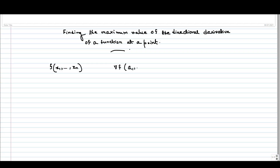Suppose the point is given as a1 to an. We will calculate the gradient at that point, and some vector u is given in the direction at which we want to calculate the directional derivative. Suppose u is the given unit vector.